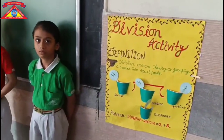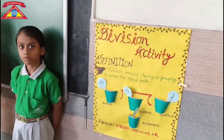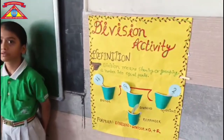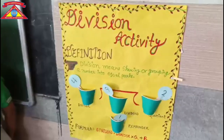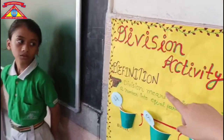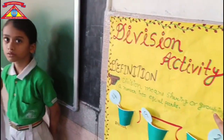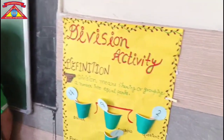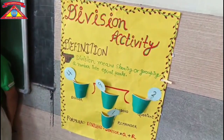Students, you learned this is the process of division. Where nine is dividend, four is divisor, two is quotient, and one is remainder.